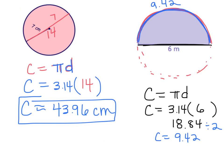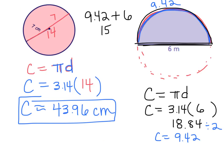Now I need to find the perimeter of the whole semicircle shape. Perimeter means all the way around the outside, so I take the curved part, which is 9.42, plus the straight bottom part, which is 6, because I have to go all the way around the shape. So 9.42 plus 6 gives me a total perimeter of 15.42 meters.